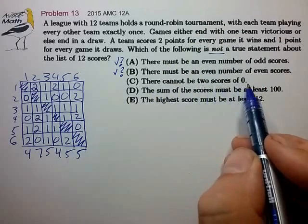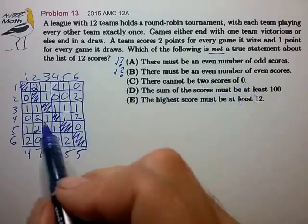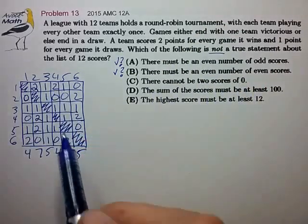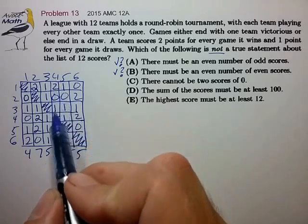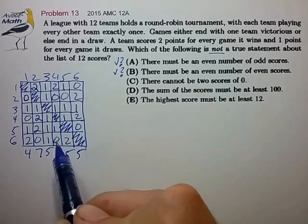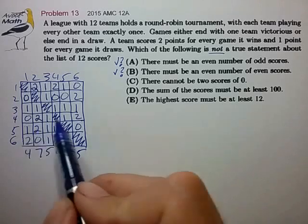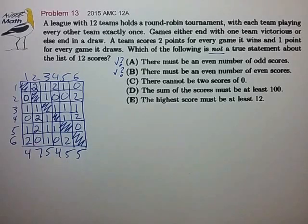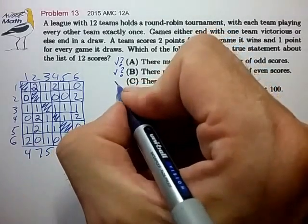There cannot be two scores of zero. I can see how I could have constructed this example to have, say, team number four lose all of its matches. But then by necessity, all the other teams must have won at least one match, and so this statement is in fact true.